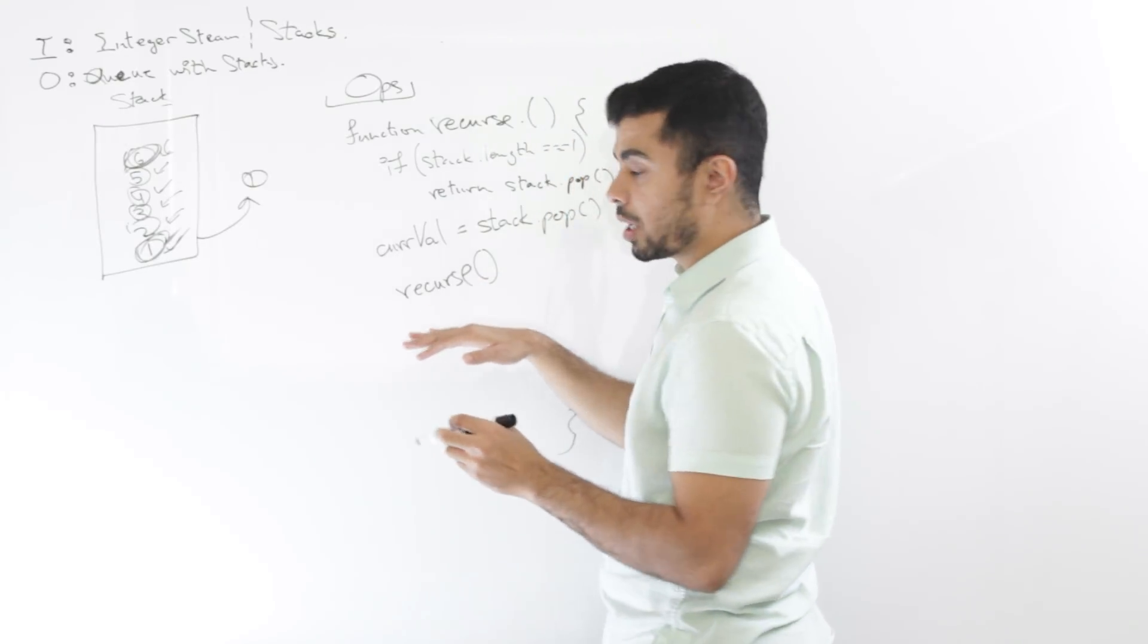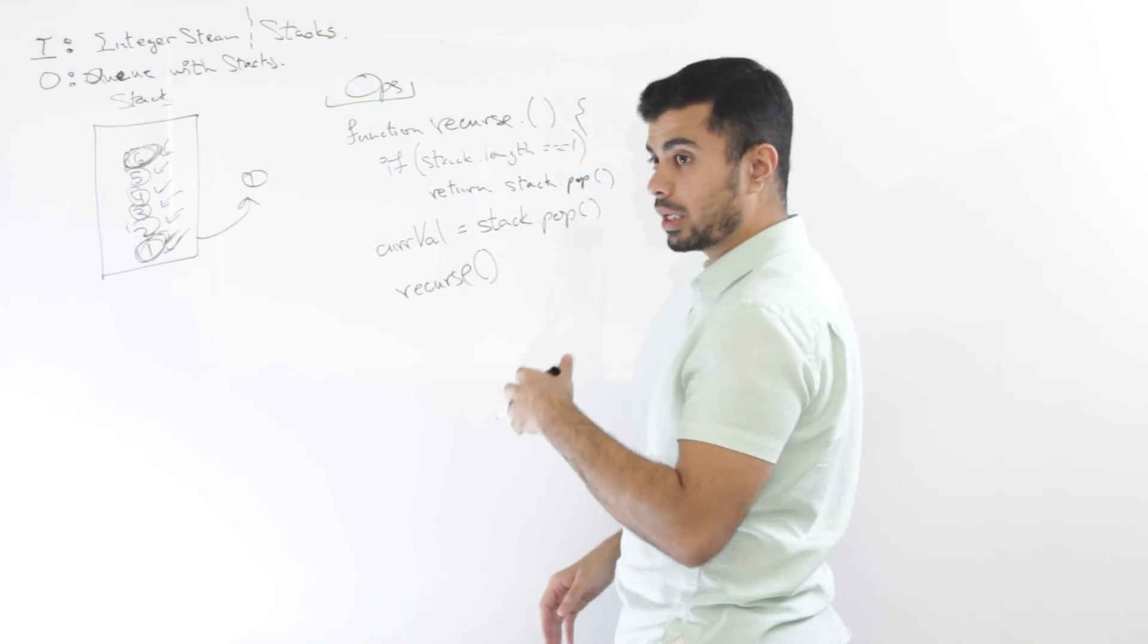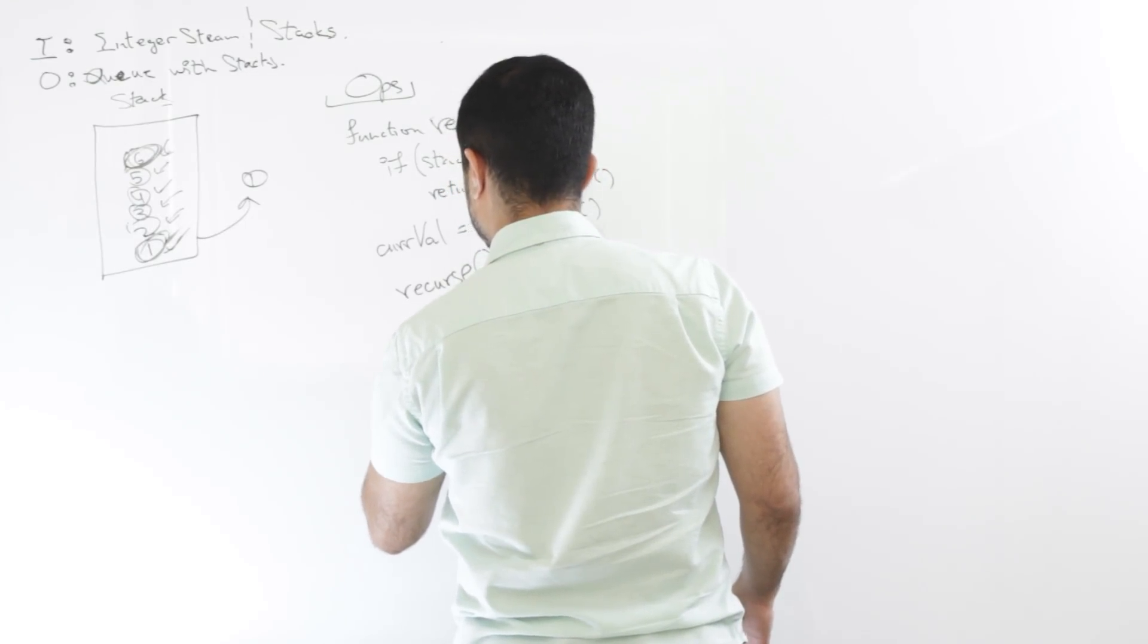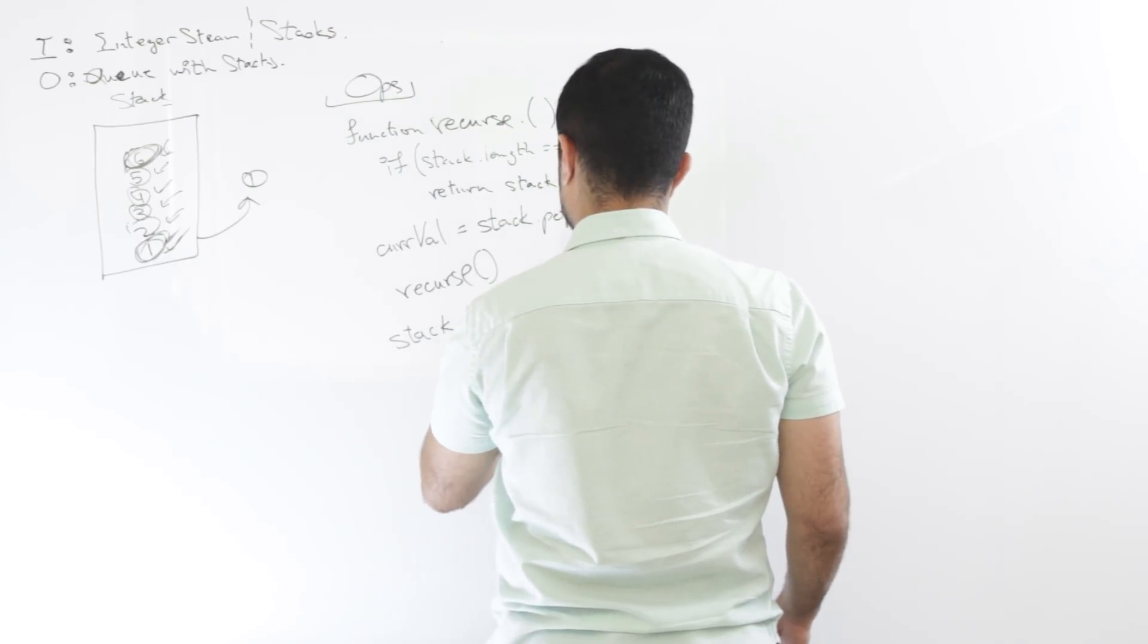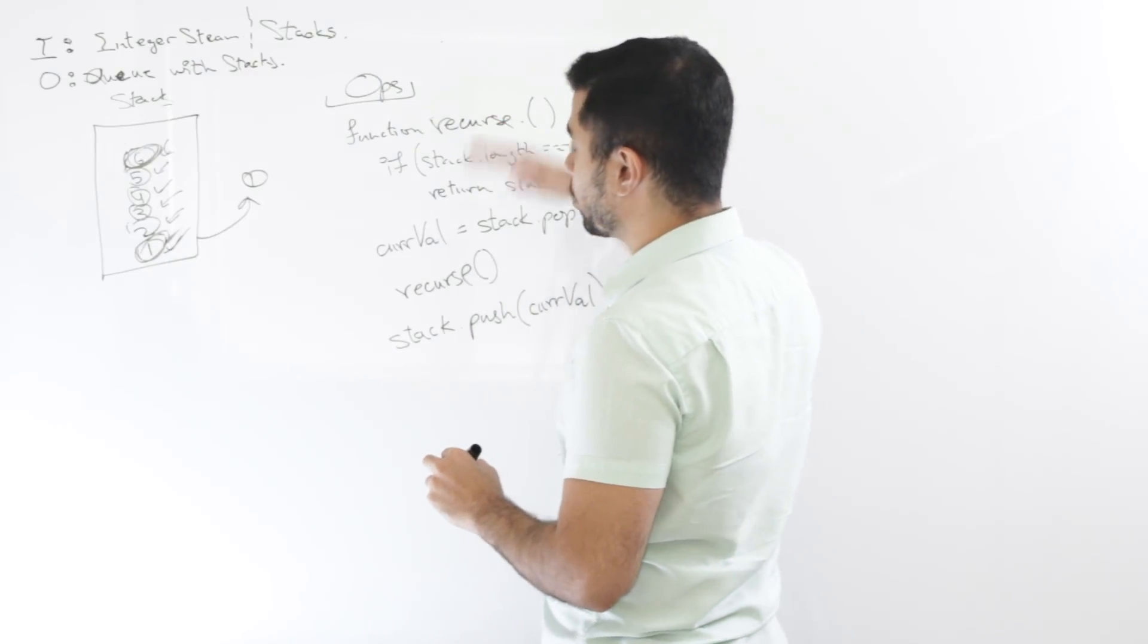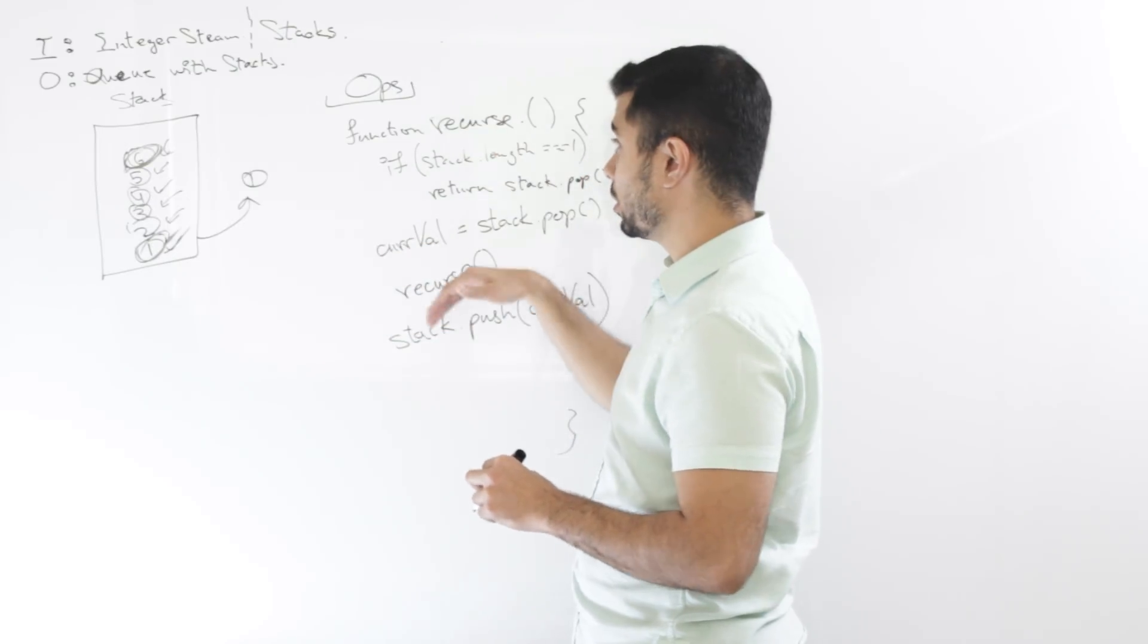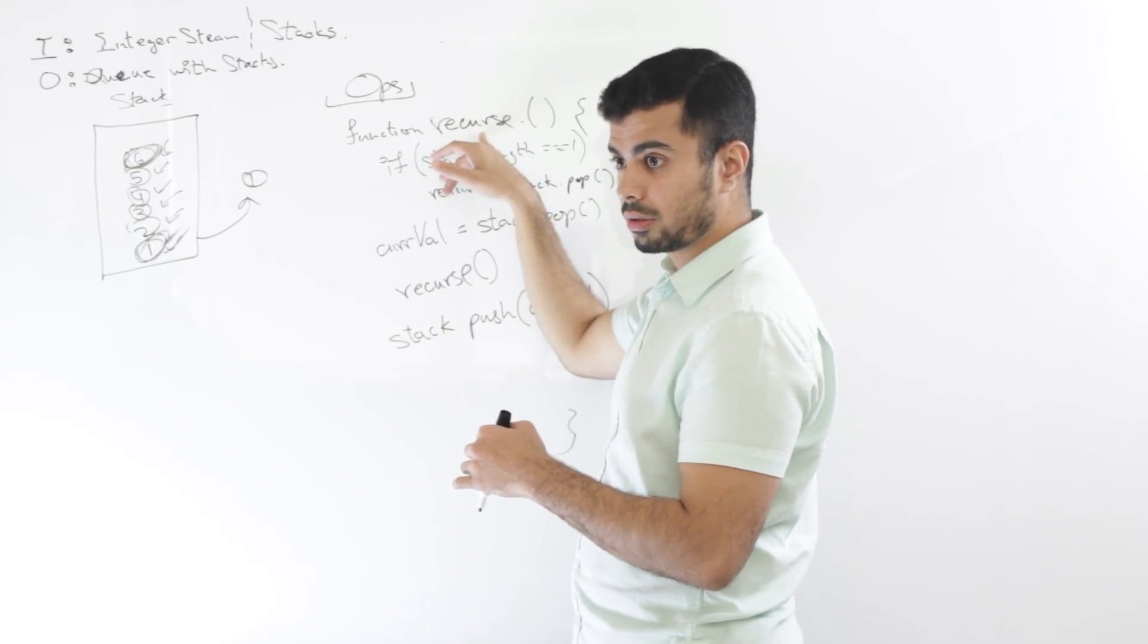So I say recurse. Okay. And once, after I recurse, I want to make sure that, okay, I stored this in memory. Now I'm recursing. I'm going all the way down. At the end, I want to push it back to the stack. Right? So I'll say stack dot push curve value. Mm-hmm. And of course we won't even go into this recursion if our first check says that the stack is empty, you know, then we wouldn't, then our Q class won't even call the recurse function. Mm-hmm. Right?